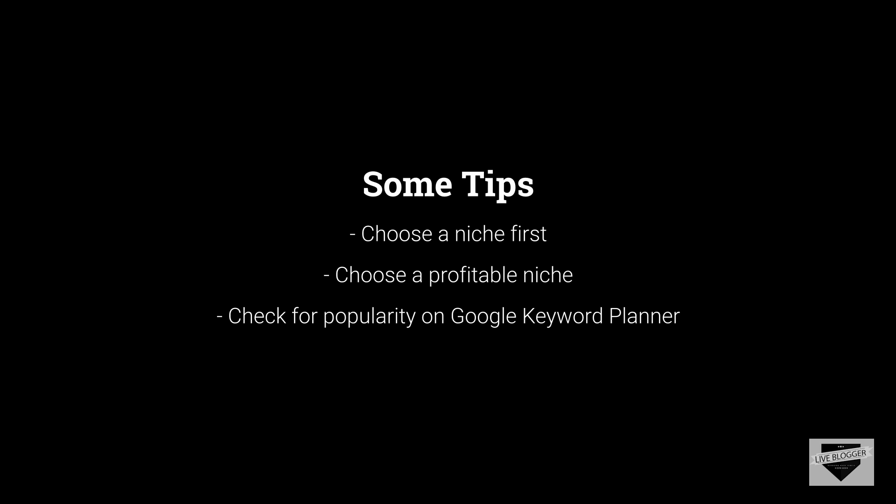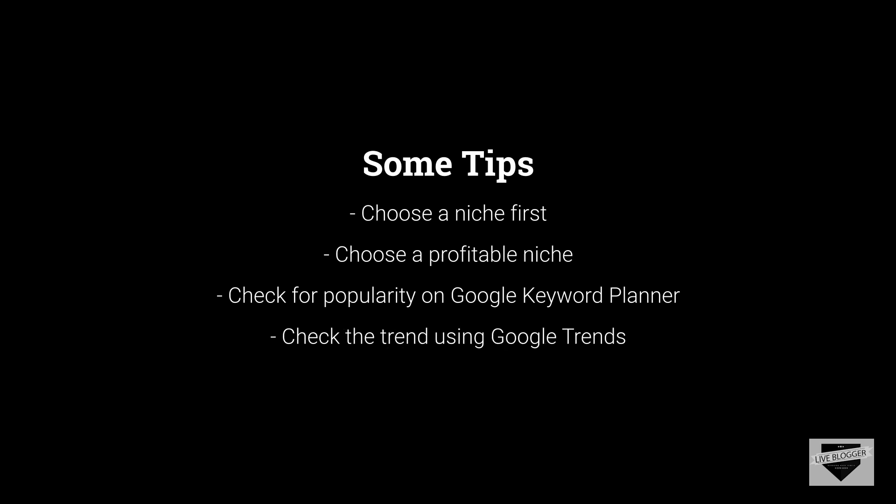Check for the number of searches per month. If you have a high number of searches, you can go ahead with that niche. You can also check Google Trends to see whether the niche you are considering has an upward trend — you can view the graph right there on Google Trends.